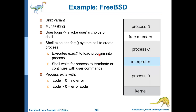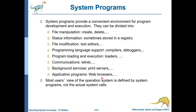FreeBSD is an example of Unix — it is a multitasking system where many processes can run. For example, after process A finishes, you can run process B, C, D, and still have free memory for more processes. The interpreter is always available alongside the kernel in memory.